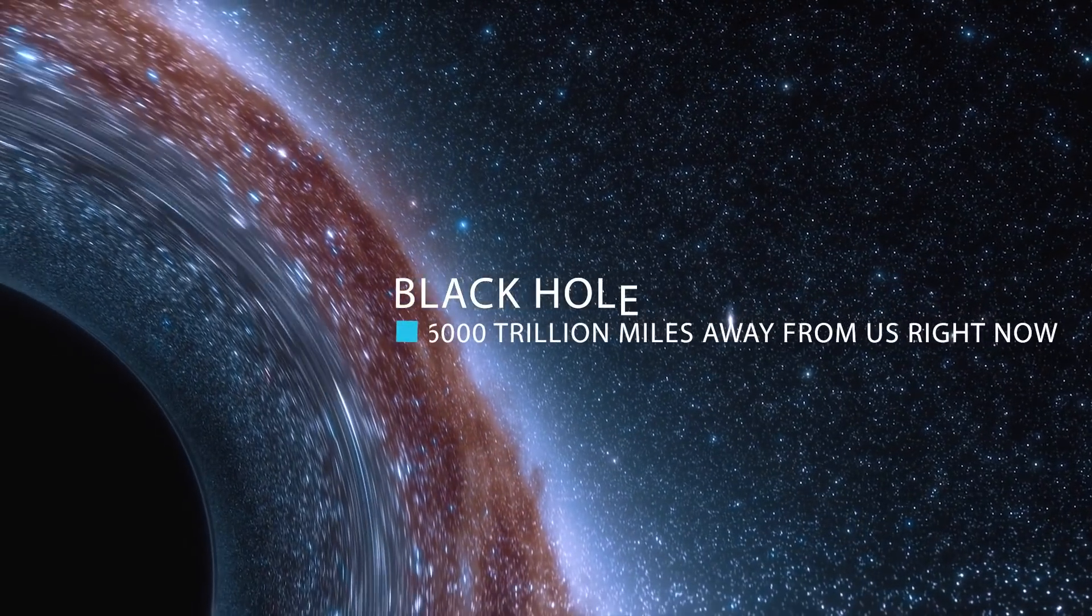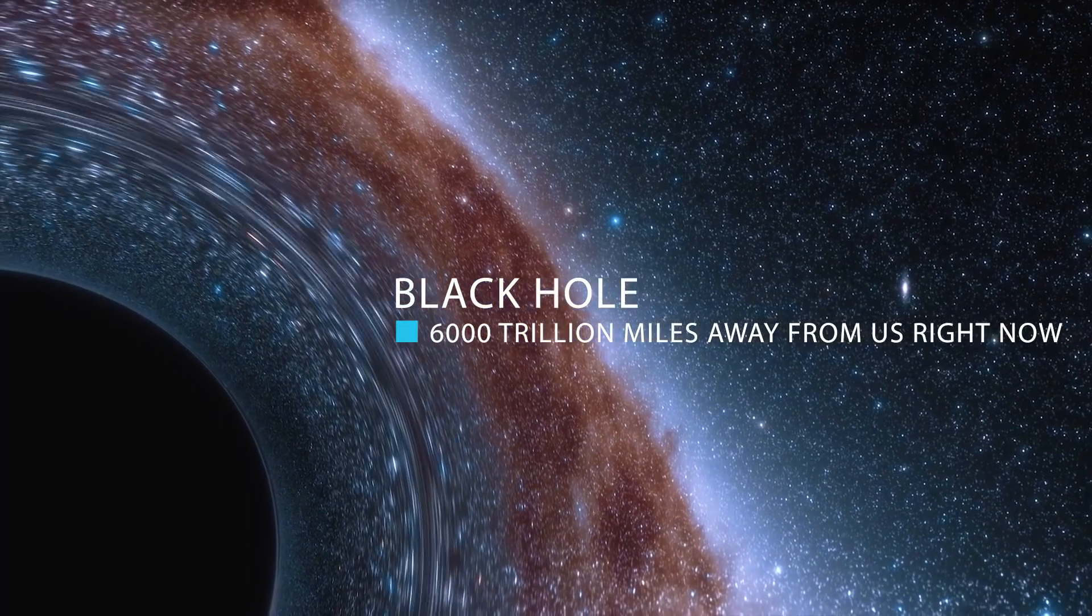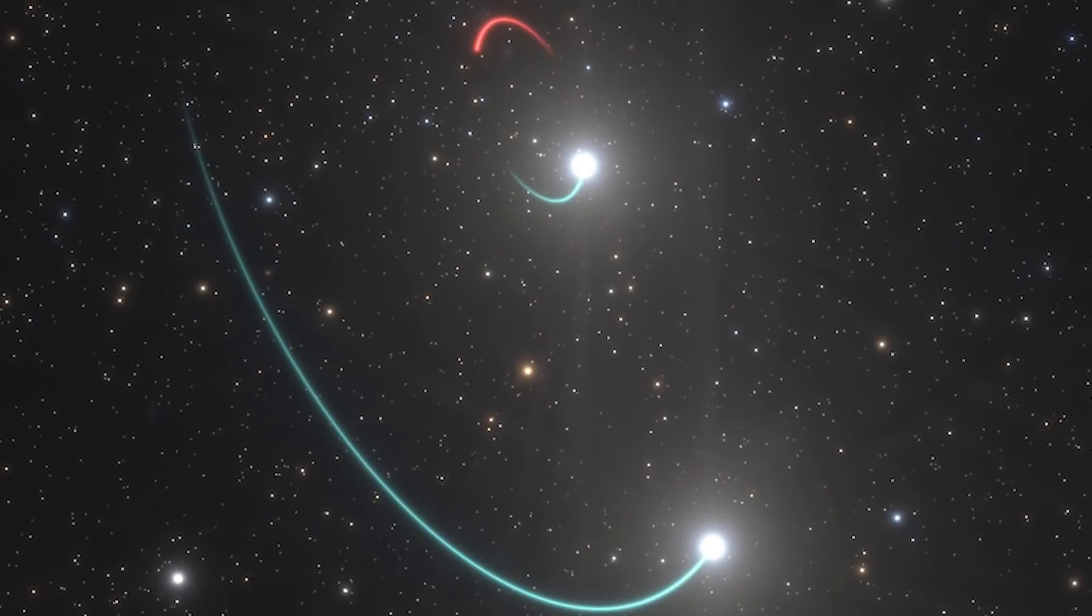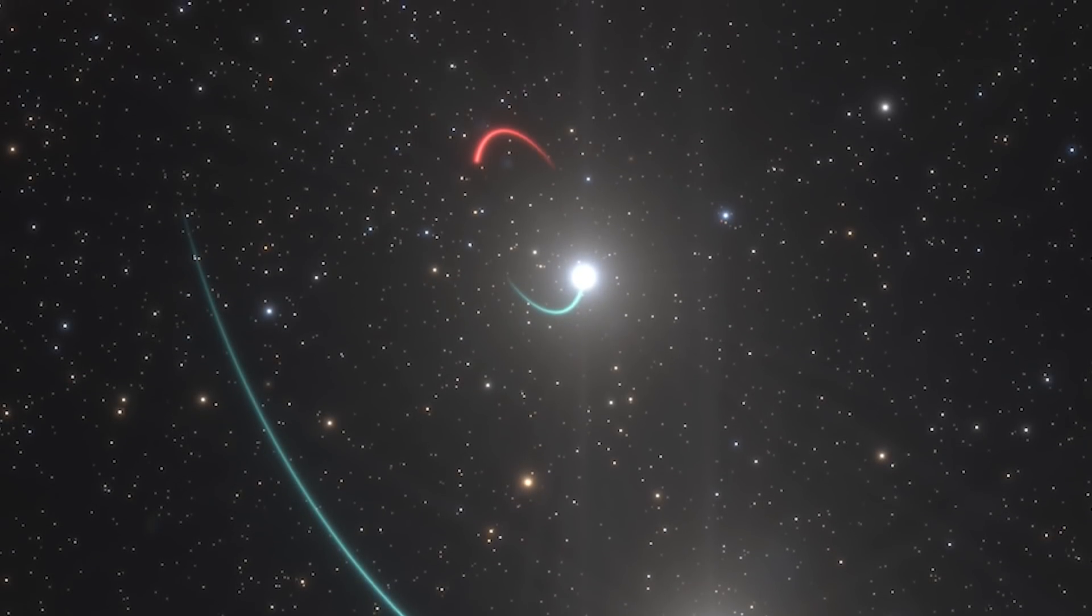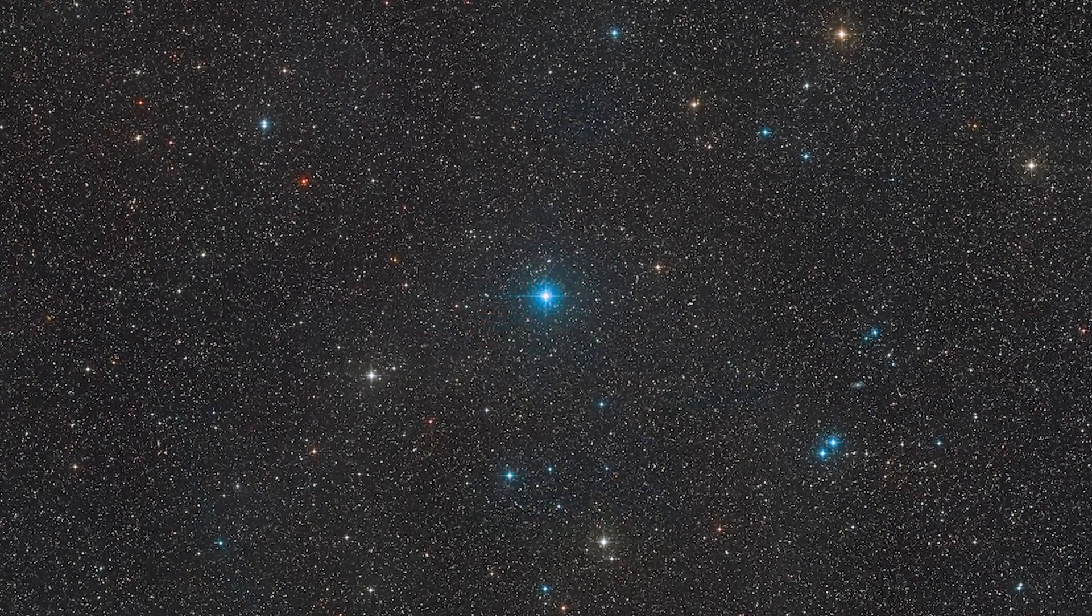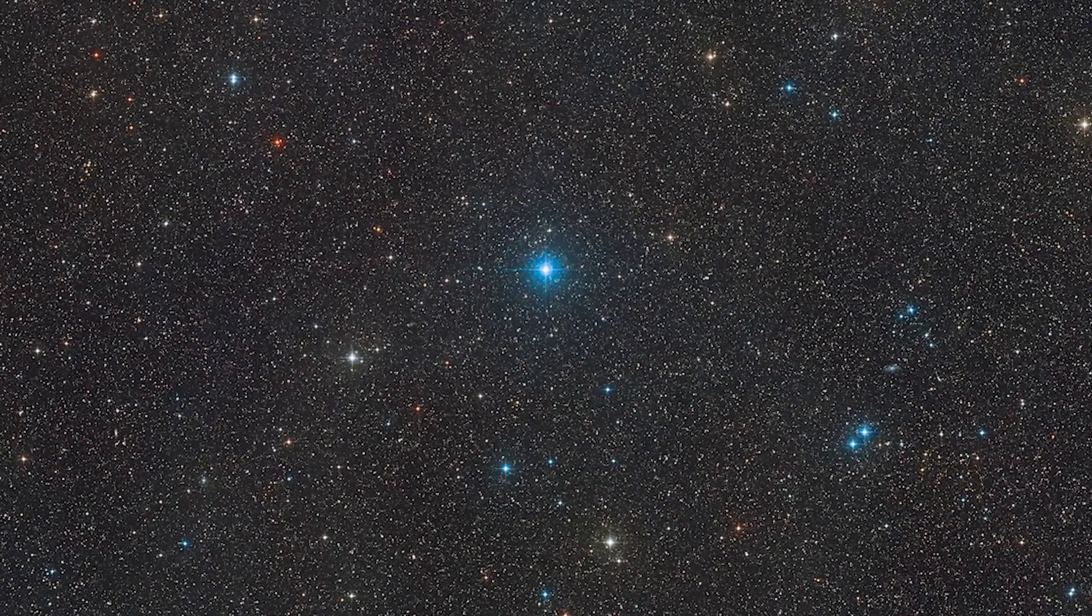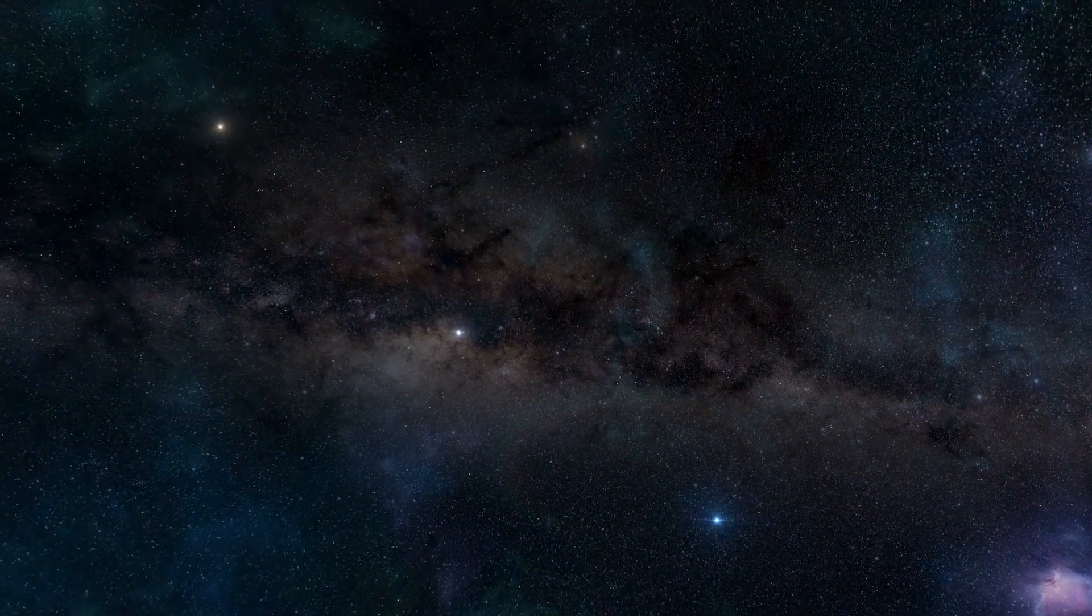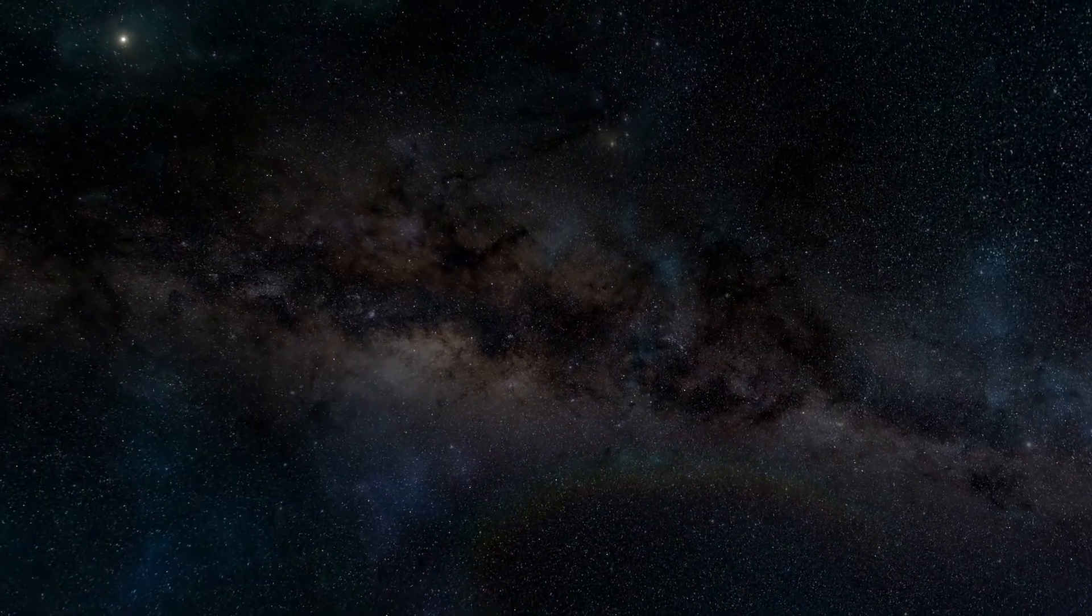For the record, a light year is about 6 trillion miles. So this black hole is 6,000 trillion miles away from us right now. For point of comparison, after HR 6819's black hole, the nearest known black hole is about 3,000 light years away from Earth in the constellation Monoceros, which would mean it's 18,000 trillion miles away from Earth. That's a long ways away.